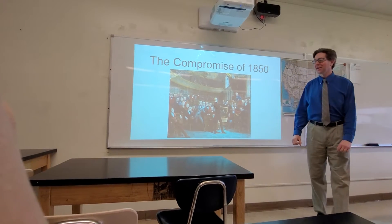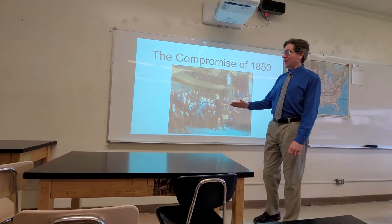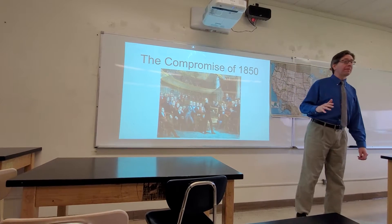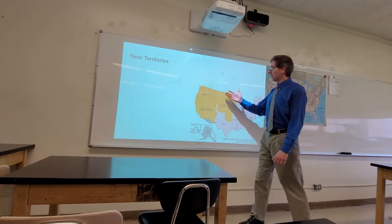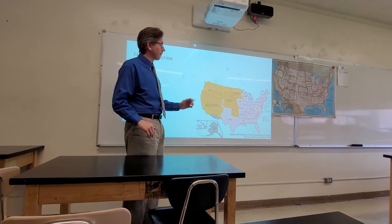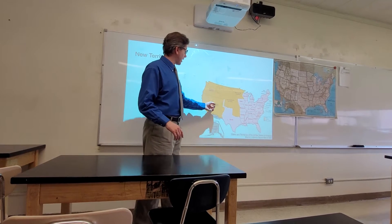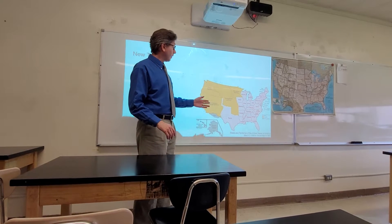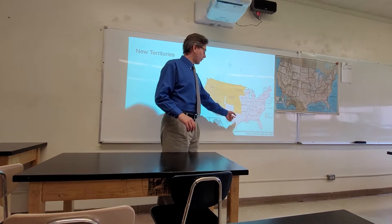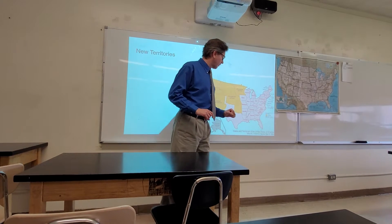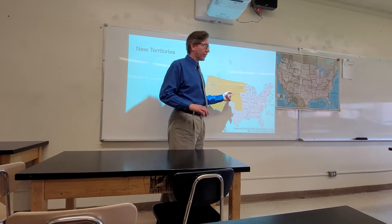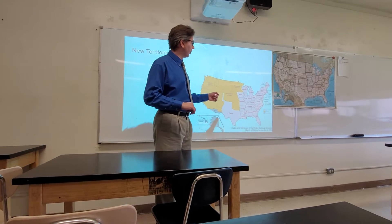We're talking about the Compromise of 1850, going ahead a couple years to deal with the aftermath of the war with Mexico. We ended up with all this territory — we've got Oregon territory, a lot of people going into California, a lot going into the Salt Lake area, and we've got Texas. All this territory originally came from France in 1802 — the Louisiana Purchase.